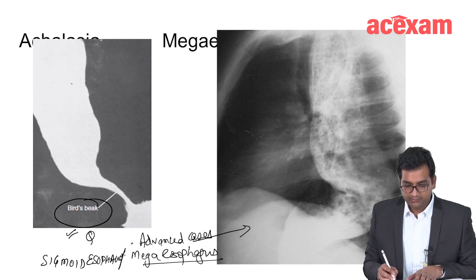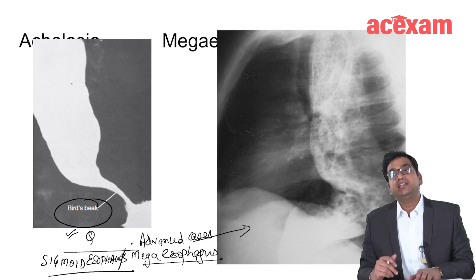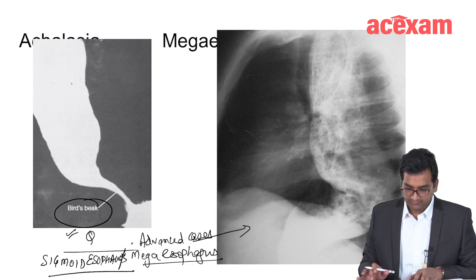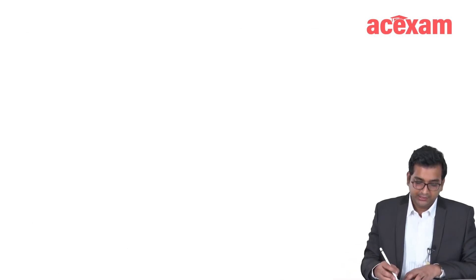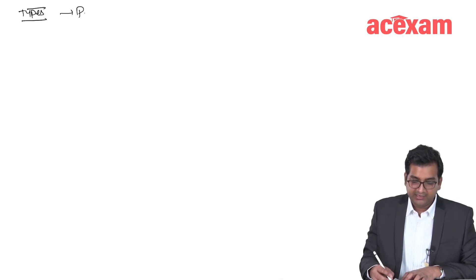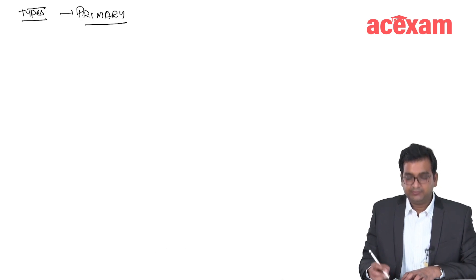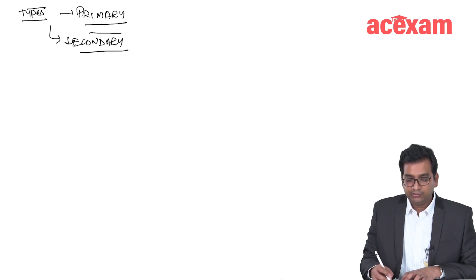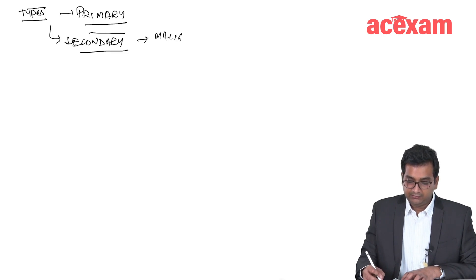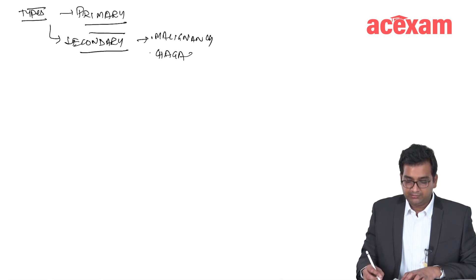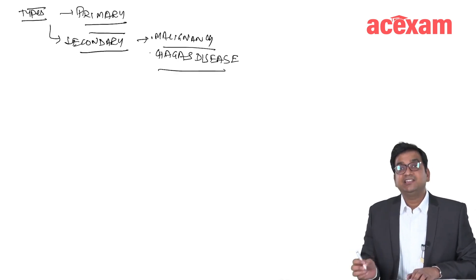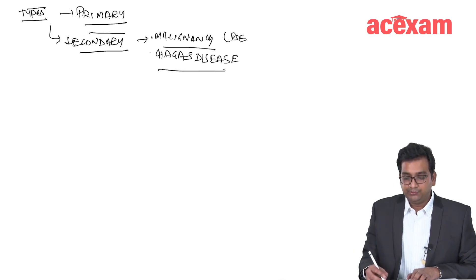Sigmoid esophagus or megaesophagus is seen in chronic cases of achalasia cardia. Achalasia can be primary, occurring on its own, or secondary due to known causes such as malignancy or Chagas disease. Achalasia occurring due to malignancy is also known as pseudo-achalasia.